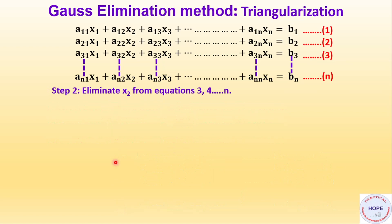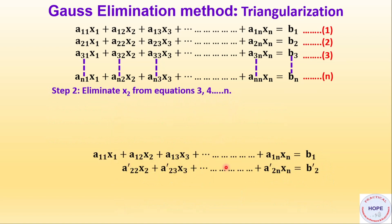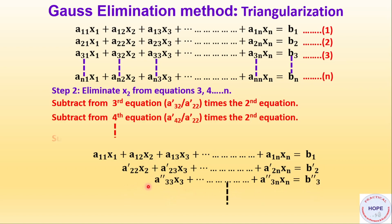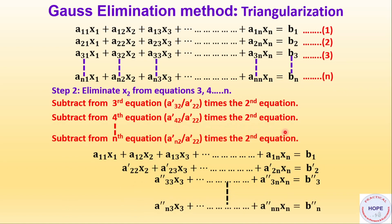Then we move on to step 2. In this step we will eliminate x2 from equations 3 to n, so equations 1 and 2 will remain as such. We subtract from equation 3 the quantity a32 divided by a22 times the second equation. If we do that, we get the third equation with no x2. Similarly, we subtract from equation 4 the quantity a42 divided by a22 times the second equation, and so on till the nth equation. So from the third equation onwards, there is no x2.